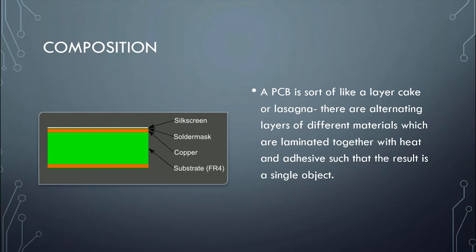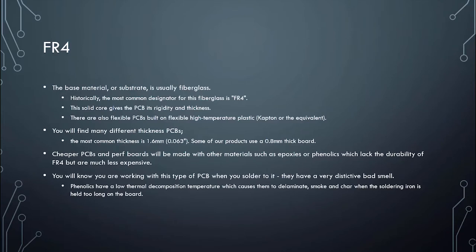When looking at a PCB there's terminology specific to its construction. A PCB is a composite material — like a cake or a lasagne — with alternating layers of different materials squished together, fused with heat and adhesives into a single object. Looking at it sideways under a microscope you'd see layers: silk screen, solder mask, a layer of copper, a layer of substrate, and usually another layer of copper. The substrate — the green part in the middle — is called FR4.